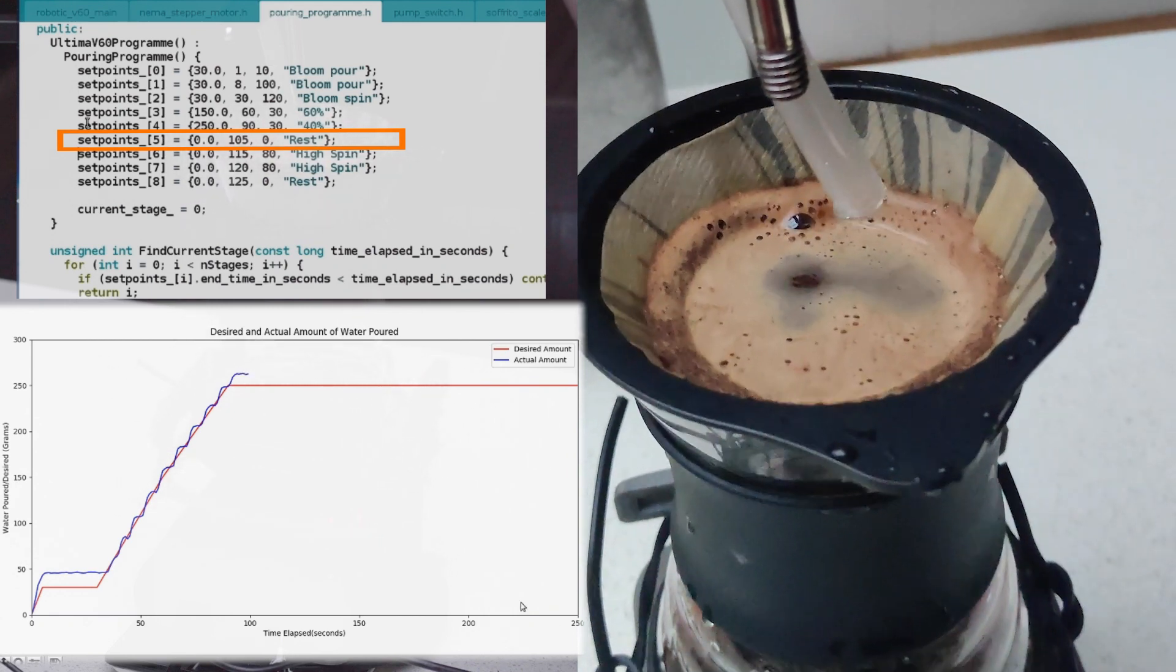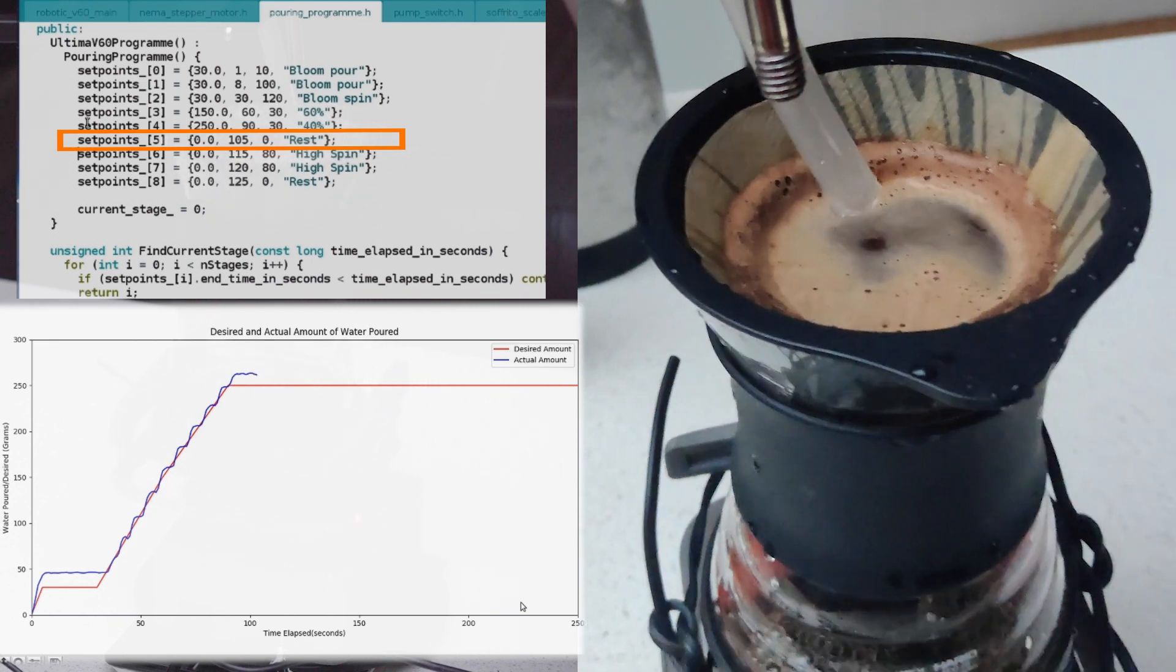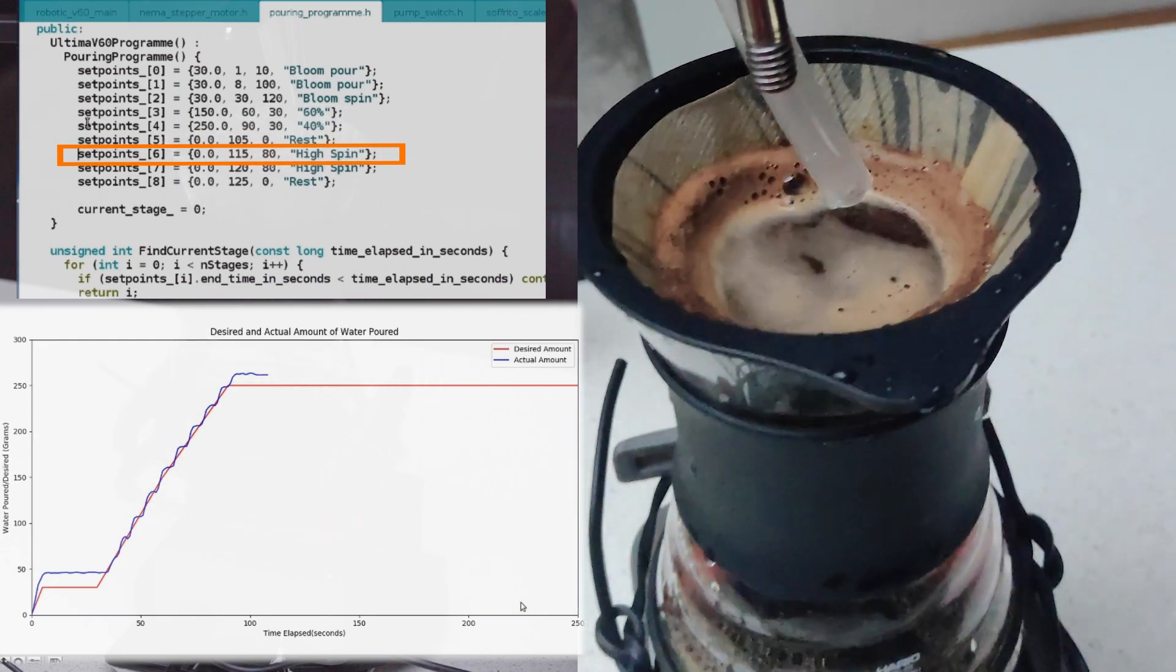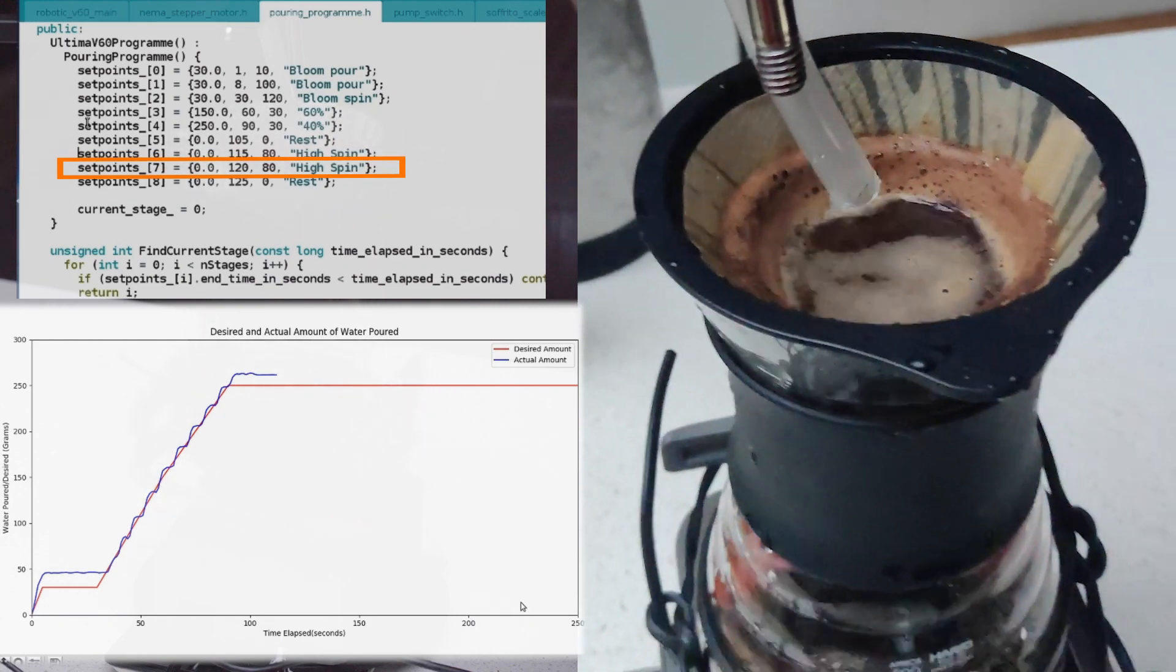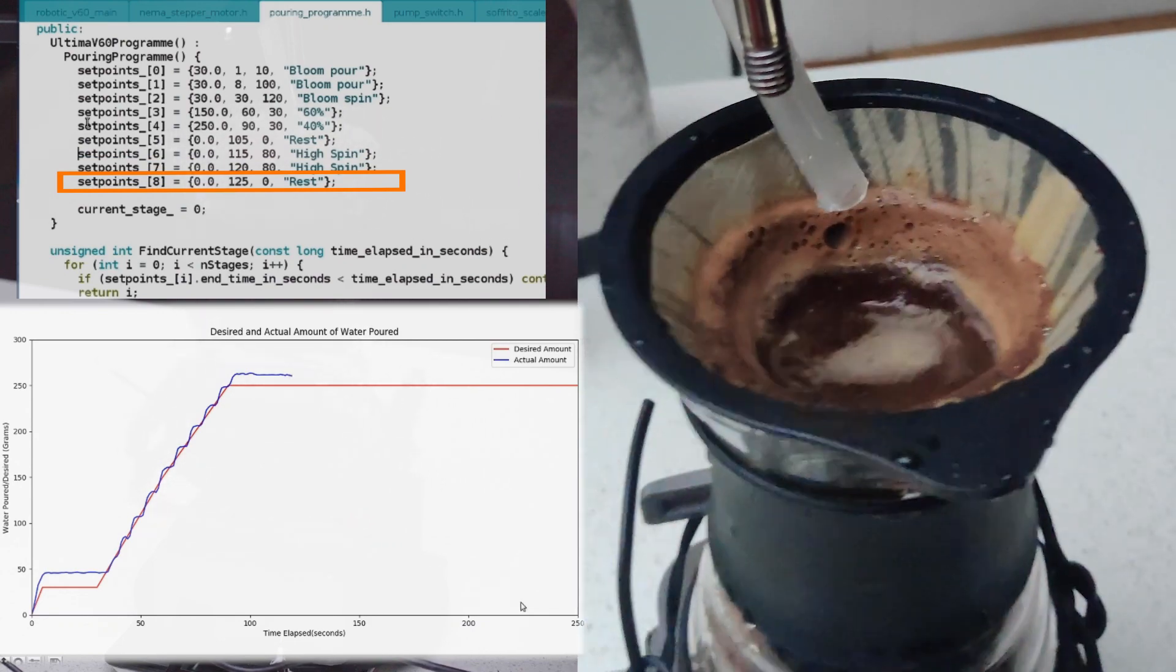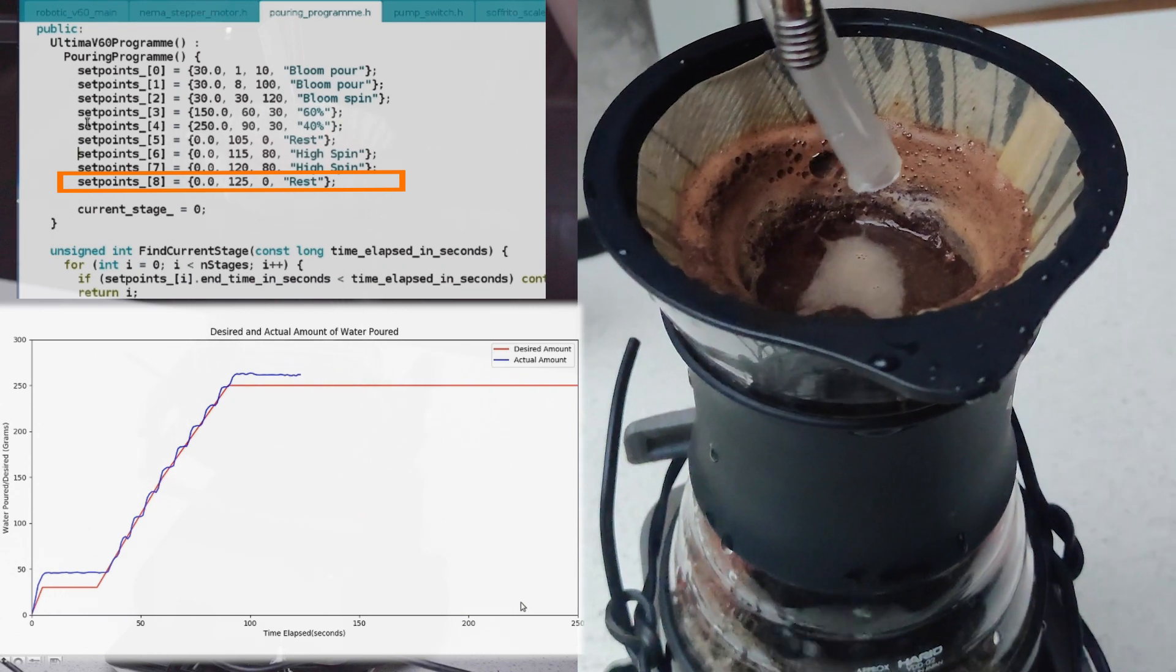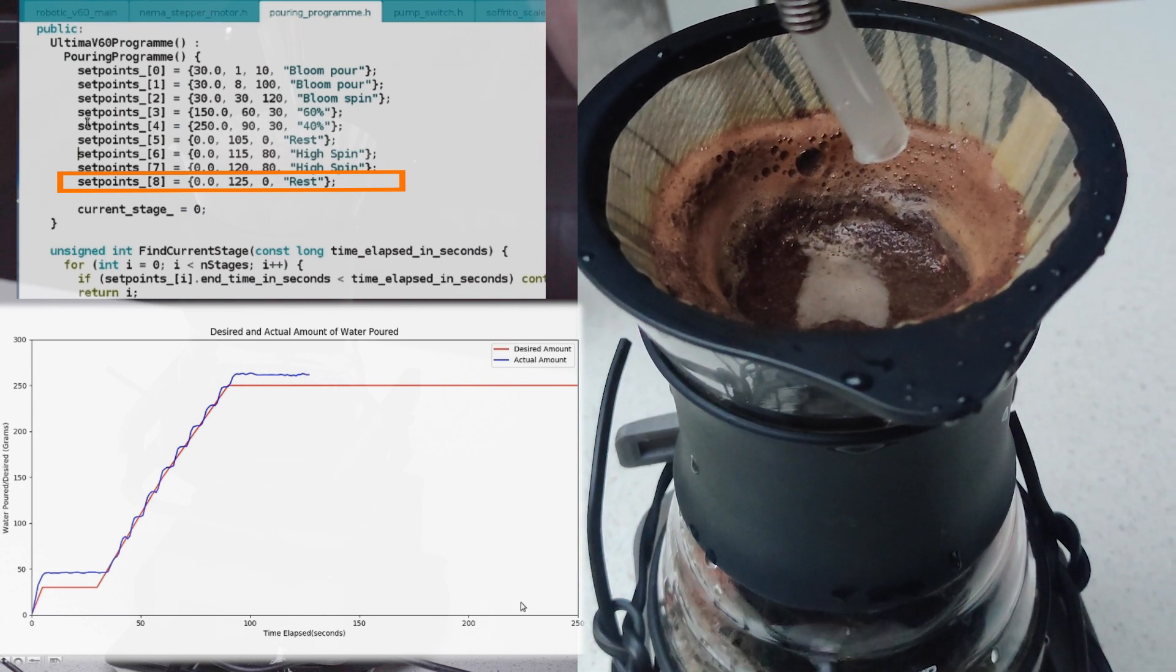Once all the water is poured we slow down the carafe speed for just a bit so that some of the water can drain. Right after, we speed up the carafe spin speed again so that we can start swirling the bed of coffee. This is what gives us that nice flat bed at the end of the drawdown.